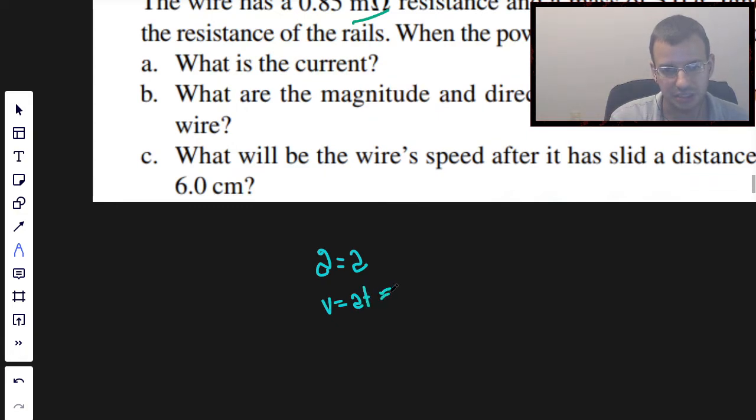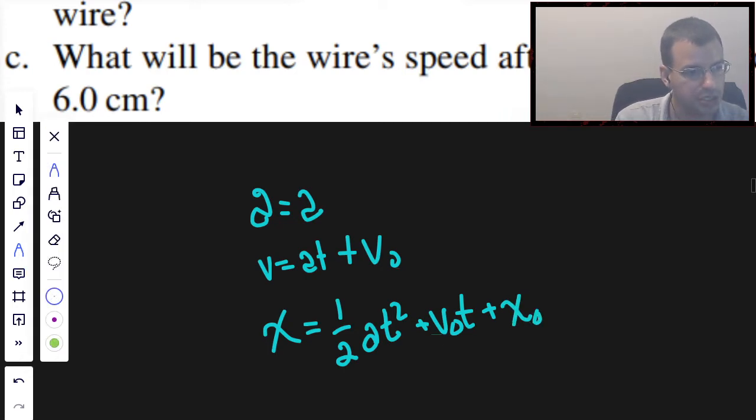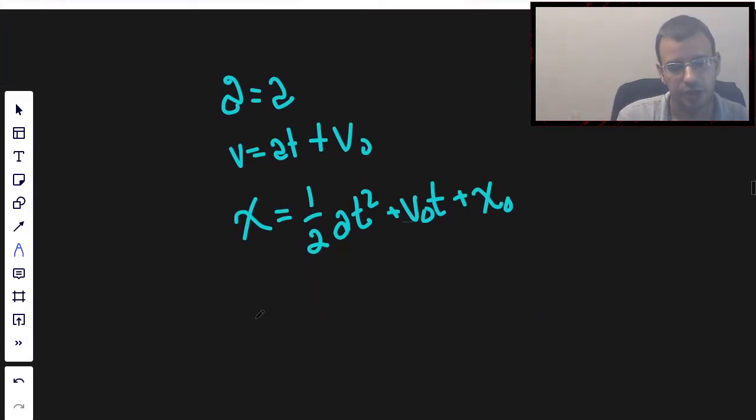V equals AT plus V naught. X equals 1 half AT squared plus V naught T plus X naught. And I know it seems kind of tedious to write out all the equations, but it helps me. That way, it helps you kind of see the bigger picture and keeps me from getting too confused.